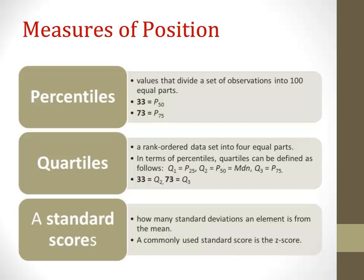Let's take a look at another example of how percentiles are interpreted. Let's say another person in our distribution scored a 73, and we know that the score of 73 is equal to the 75th percentile. So, looking back at our definition, 75% of scores are below the 75th percentile. We could also look at it as 25% are above the 75th percentile.